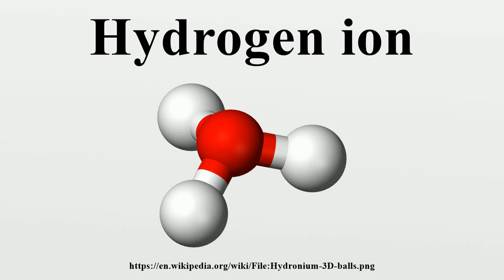Cation: When hydrogen loses its electron, the following cations can be formed. Hydron — the general name referring to the positive ion of any hydrogen isotope. Proton: 1H+. Deuteron: 2H+, D+. Triton: 3H+, T+. In addition, the ions produced by the reaction of these cations with water, as well as their hydrates, are called hydrogen ions.